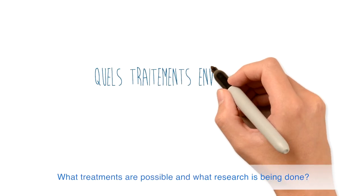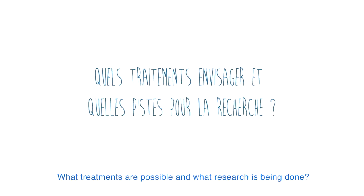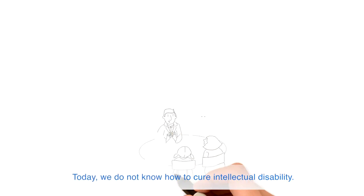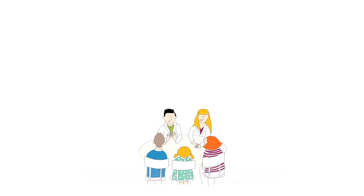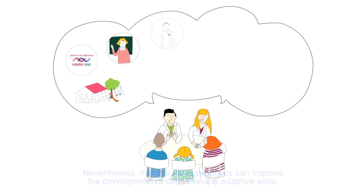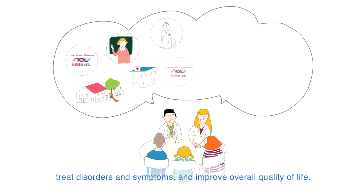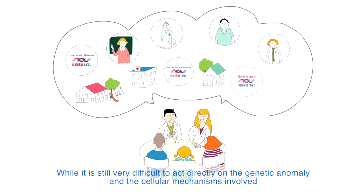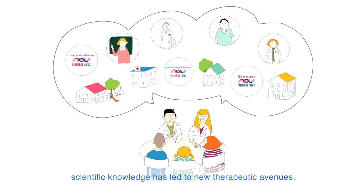What treatments are possible and what research is being done? Today, we do not know how to cure intellectual disability yet. Nevertheless, therapeutic approaches can improve the development of cognitive and adaptive skills, treat disorders and symptoms, and improve overall quality of life. While it is still very difficult to act directly on the genetic anomaly and the cellular mechanisms involved, scientific knowledge has led to new therapeutic avenues.